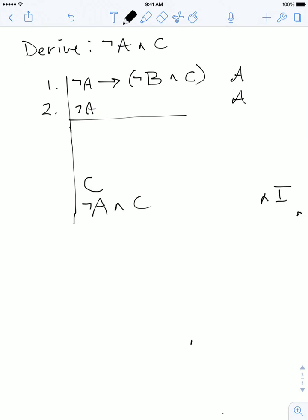Then we could use line two and whatever line number has the sentence C on it to use the ∧ introduction rule and write down the last sentence in our derivation.